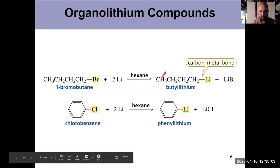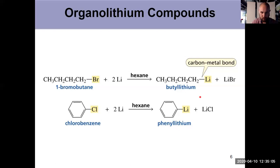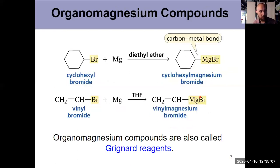What about an organomagnesium compound? Same idea. Alkyl bromide reacts with magnesium shavings in a non-polar solvent. The solvent's a little more important here and you prepare an organomagnesium bromide. Those organomagnesium compounds are called Grignard reagents, named after Victor Grignard, the guy who discovered them.